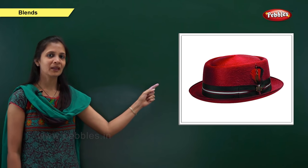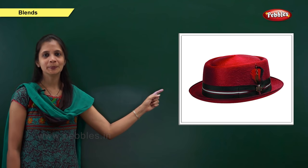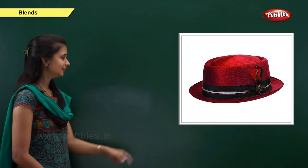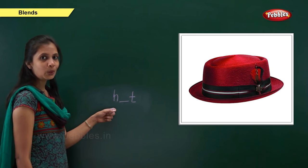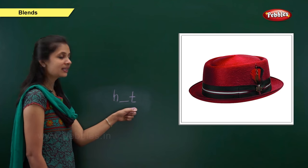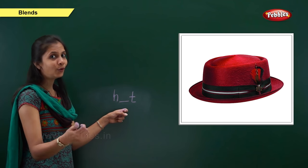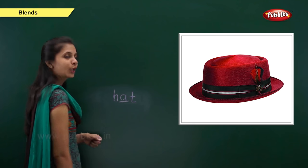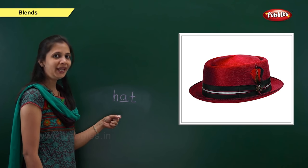Next one. Which picture is this? Yes, it is hat. What is the sound of this word? It is h, a, d — hat. When the sound is 'h', the letter is h. When the sound is 't', the letter is t. What about the middle sound? H, a, t. So the vowel is a. H, a, t — hat.